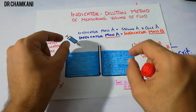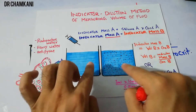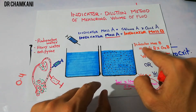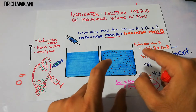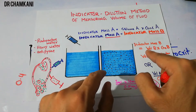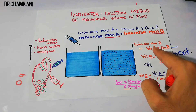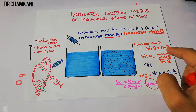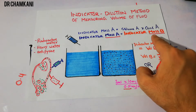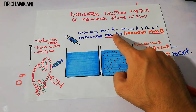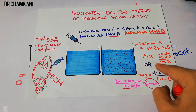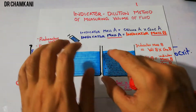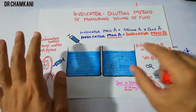Indicator mass B is the mass of the indicator after it has been injected into the fluid. Since we want to calculate the volume of this fluid, mass B equals volume B times concentration B. Rearranging, volume B equals mass A divided by concentration B. By substituting mass A as volume A times concentration A, we derive the final equation. With this equation we can measure the volume of any fluid compartment.